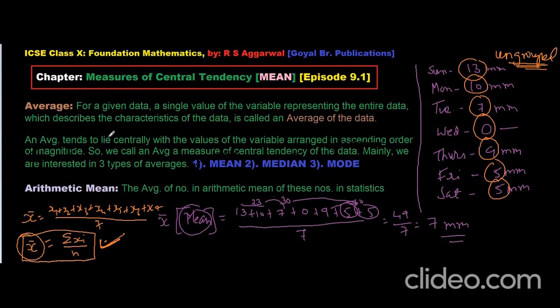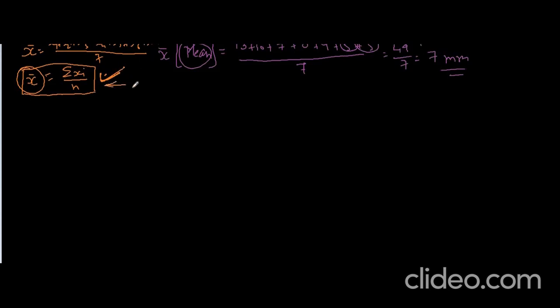Let us talk about grouped data. An average tends to lie centrally with the values of the variable arranged in ascending order of magnitude. So we call an average a measure of central tendency of the data. Mainly we are interested in three types of averages: mean, median, and mode. Arithmetic mean — the average of numbers — is the arithmetic mean of these numbers in statistics. So this formula is for ungrouped data. Let us work it out for grouped data now.